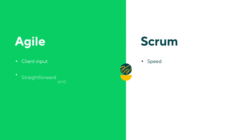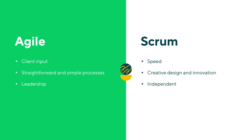If you're looking for a more straightforward, simple process, go with Agile. However, if your team would like the space for more creative design and innovation, Scrum is more suitable. If your project team works well with a leadership dynamic, go with Agile. If your team is self-motivated and independent, then Scrum may be for you. And if you're looking at a big-picture, organization-shifting project, now's the time to explore Agile. But if your organization is already familiar with Agile and needs some more direction, it may be time to embrace Scrum.